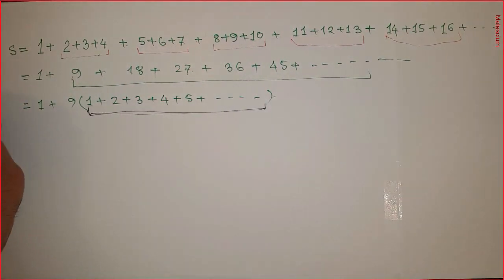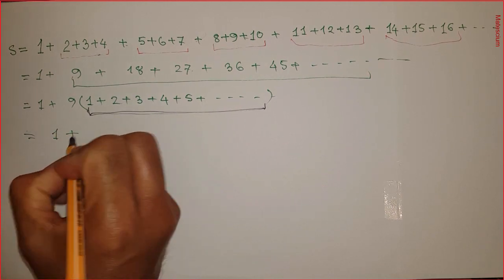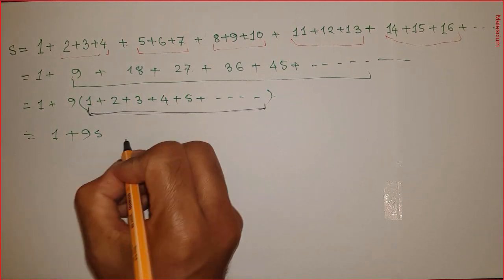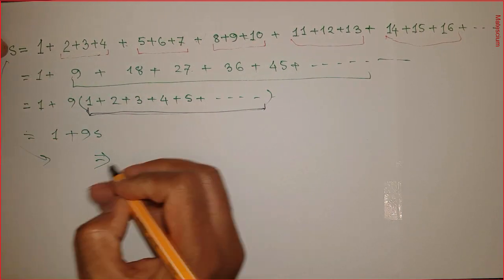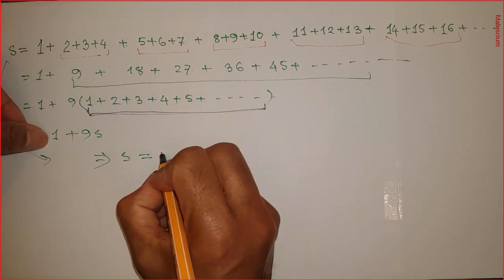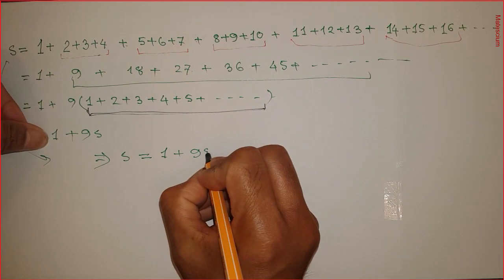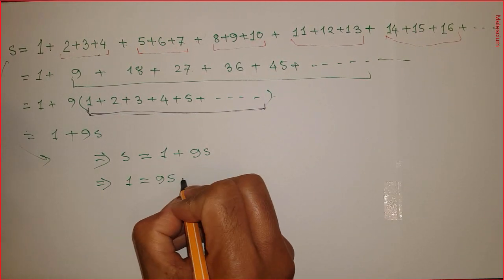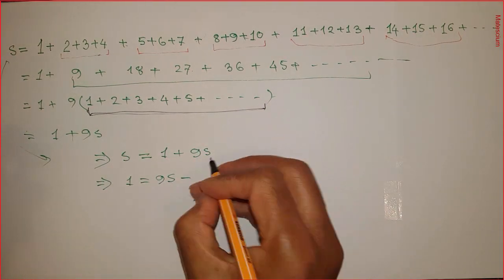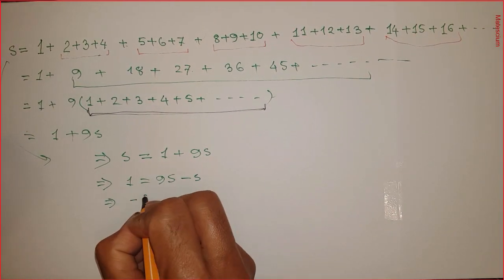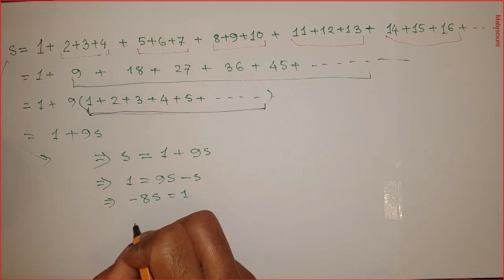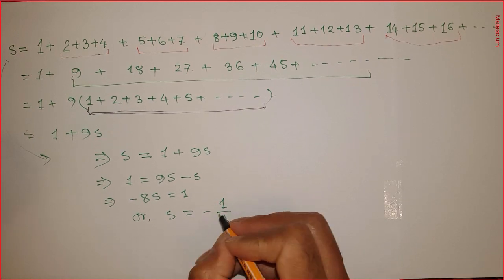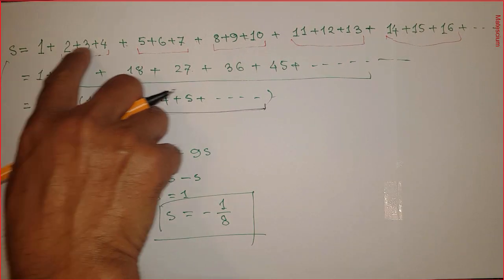So I can substitute that part by S, which means S equals 1 plus 9 times S. Rearranging: 1 equals S minus 9S, so 1 equals minus 8S, meaning minus 8S equals 1, or S equals minus 1 over 8. Yes, this is the answer — that means this series equals minus 1 over 8.